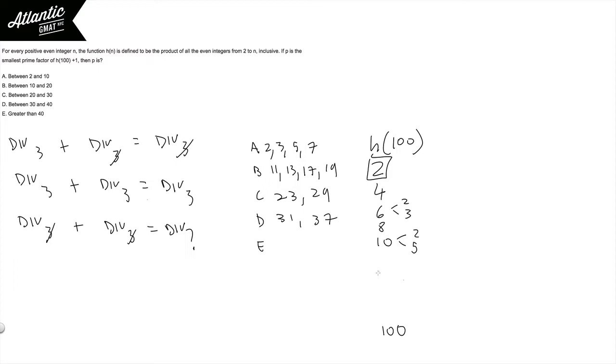7 is also going to be there because 14 is going to be somewhere in here. And by that same logic, 11 is going to be in there because we know that 22 is somewhere between 14 and 100, and it's an even number. So it's definitely a part of our h of 100.